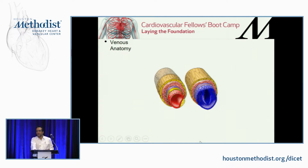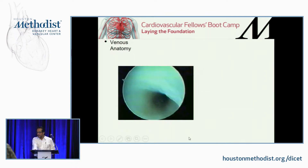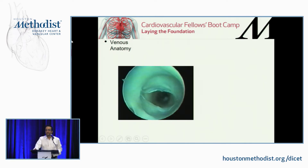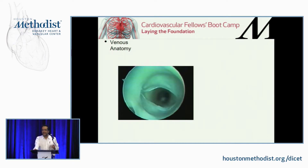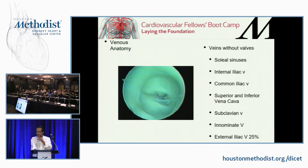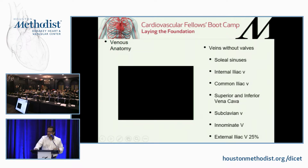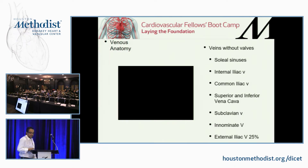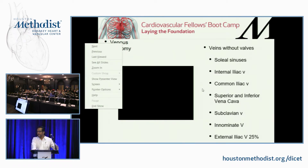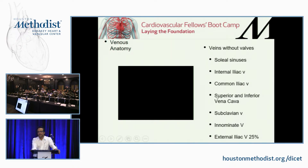As we know from anatomy, arteries and veins are different because of the layers they have, the thickness, and one more characteristic — the valves. One thing you need to know is which veins in the body don't have any valves. Veins without valves include the soleal sinuses — one of the distal veins that doesn't have valves in an area where valves are normally present but are absent. Then the central veins: starting from the internal iliac or common iliac, the cava, subclavian, innominate — and the external iliac veins only have valves about 25% of the time.